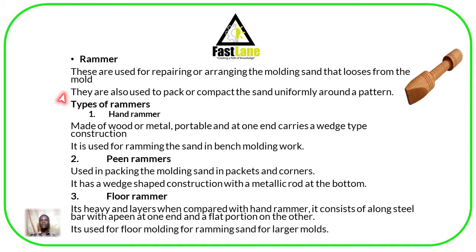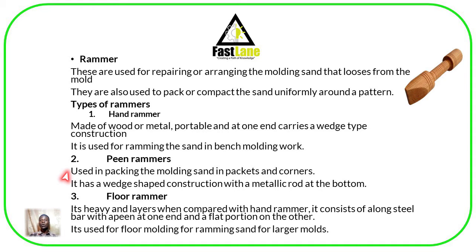A hand rammer is basically made of wood or metal, is usually portable, and at one end carries a wedge type construction. It is basically used for ramming sand in bench molding work. A pin rammer is used for packing the molding sand in pockets and corners. It also has a wedge-shaped construction with a metallic rod at the bottom.